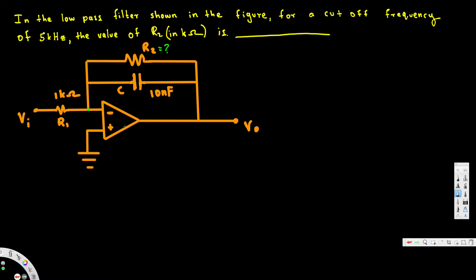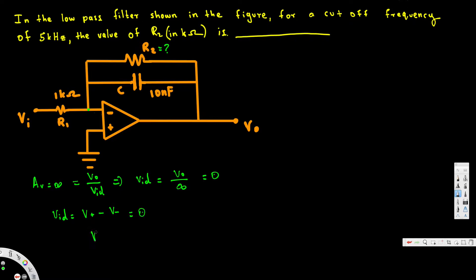The first thing is we have to know whether this is an ideal or non-ideal op-amp. Since they haven't mentioned anything about it, we assume this is an ideal op-amp. For an ideal op-amp, the voltage gain is equal to infinity. Voltage gain can also be expressed as Vo divided by Vid, which implies that Vid equals Vo over infinity, which equals zero. Since Vid equals V-plus minus V-minus equals zero, we can derive that V-plus equals V-minus for an ideal op-amp.